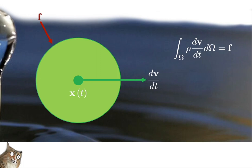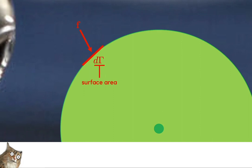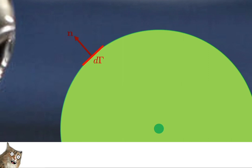To calculate the appropriate momentum change for the entire fluid blob, we need to integrate over the entire volume, giving us a reasonable left-hand side for Newton's second law. However, the right-hand side — the forces — are still a bit nebulous. So let's zoom in. Our forces act on the surface of our object, and it's easier to understand force as acting on a small surface patch. So rather than talk about force, we are going to introduce the concept of traction.